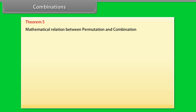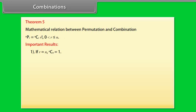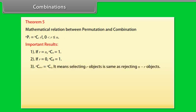Theorem 5 — Mathematical relation between permutation and combination: NPR equals NCR into R factorial, where 0 is less than R is less than or equal to N. Important results: 1. If R equals N, then NCN equals 1. 2. If R equals 0, then NC0 equals 1. 3. NC(N minus R) equals NCR, meaning selecting R objects is the same as rejecting N minus R objects. 4. NCA equals NCB means A equals B, or A equals N minus B, that is N equals A plus B.